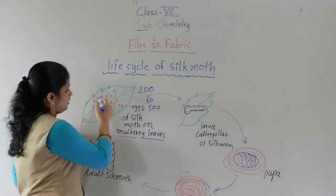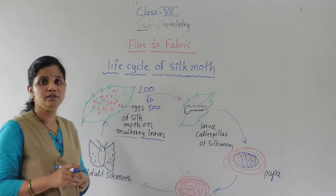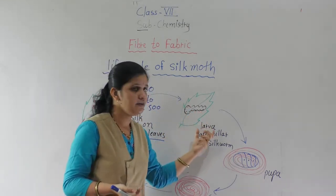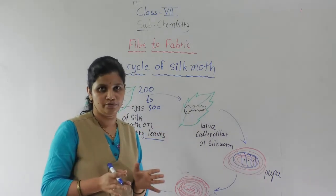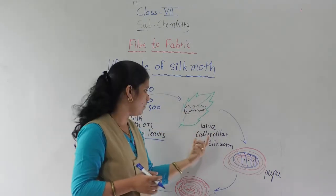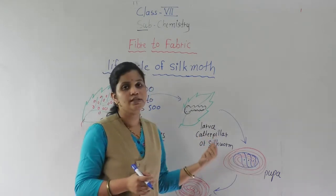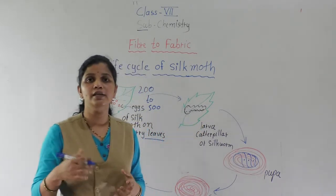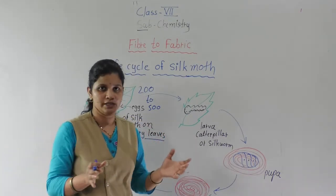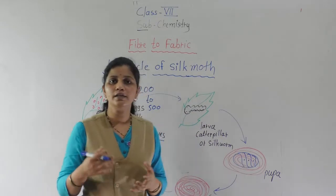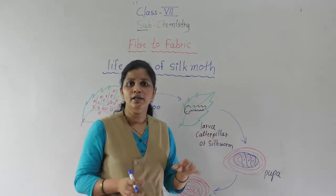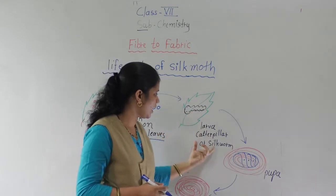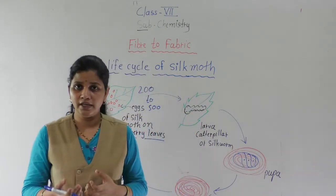After some time, these eggs hatch and larvae — or you can say caterpillars — come out. The next stage is the larva or caterpillar, also called the silkworm. After the hatching process, it comes out and starts eating mulberry leaves. After that, the next stage is the pupa. When the caterpillar has finished eating mulberry leaves, the next stage is the pupa.